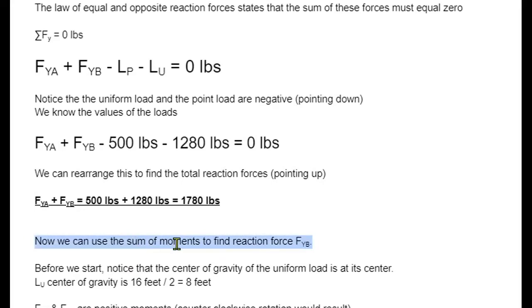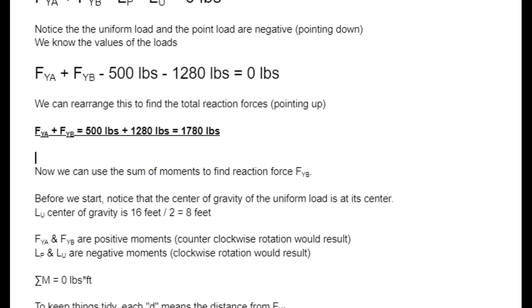Now we can use the sum of moments to find the reaction force at point B. Before we start, notice that the center of gravity of the uniform load is at the center of that beam. If we take 16 feet and divide it by 2 to find the middle of the beam, that's where our uniform load is going to be. If we reduced it to a single point, it's going to be at the center of gravity. The reaction forces at A and B are pushing up, and that would cause a counterclockwise rotation. The loads are pushing down, so those are negative, and they would cause a clockwise rotation. Those moments are going to be negative.